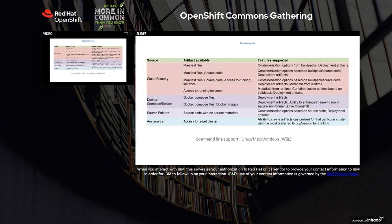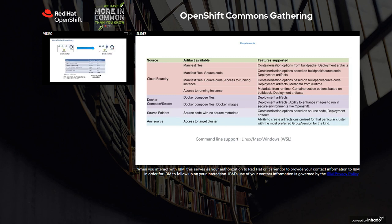Now let's look at the different requirements for Move2Kube. Depending on the source platforms, it can gracefully scale depending on the data available. If manifest files alone are available, or source code is additionally available, or runtime instances are available in the case of Cloud Foundry, it will create the right artifacts depending on what is there. Similarly for Docker Compose, depending on whether Docker Compose files or source code is available, it creates the right destination artifacts.